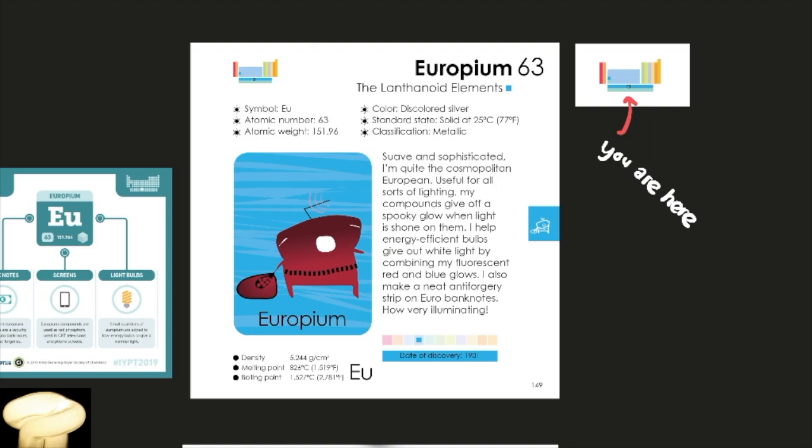We are here on the periodic table. Europium, element number 63, the lanthanoid elements. Its symbol is EU, its atomic number is 63, its atomic weight is 151.96, its color is discolored silver, its standard state is solid at 25 degrees Celsius or 77 degrees Fahrenheit. Its classification is metallic.